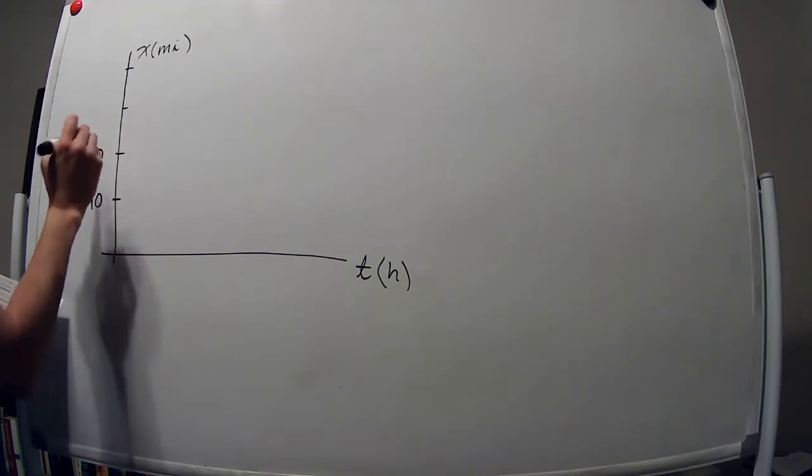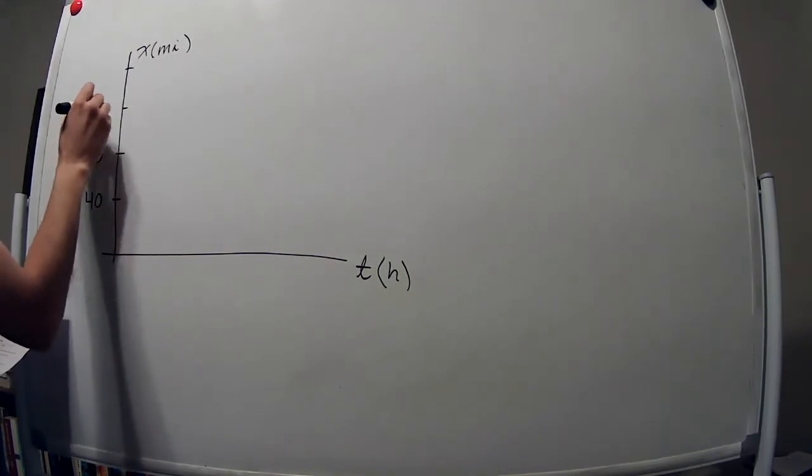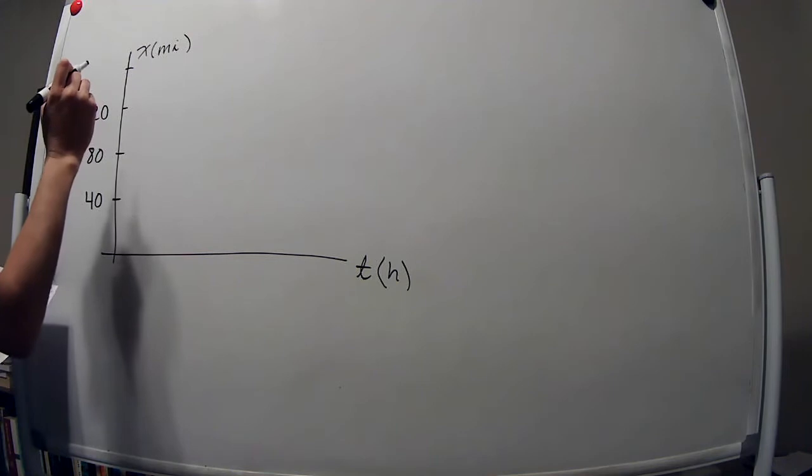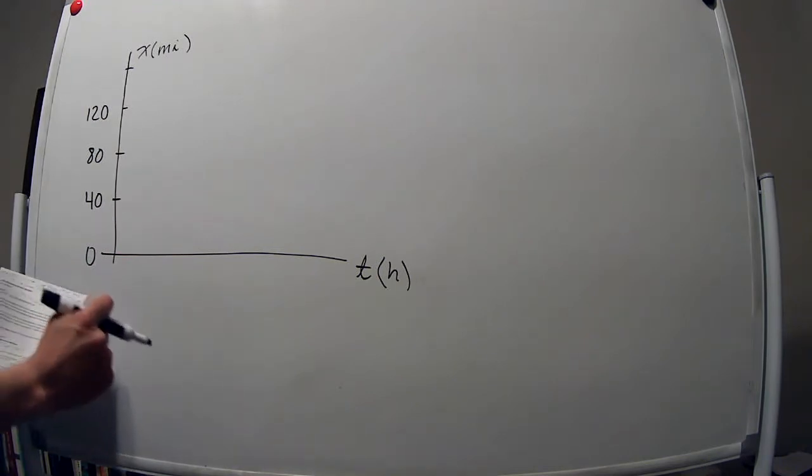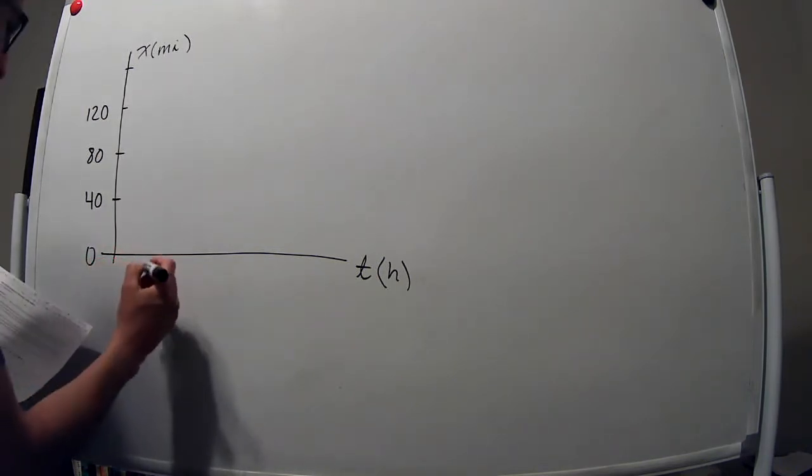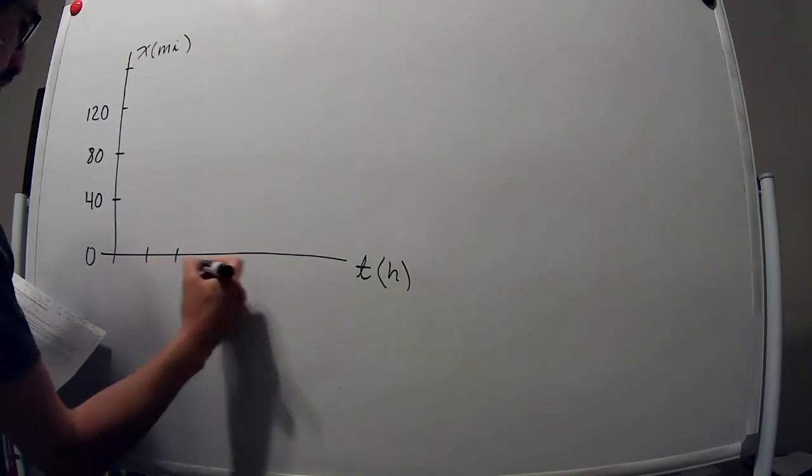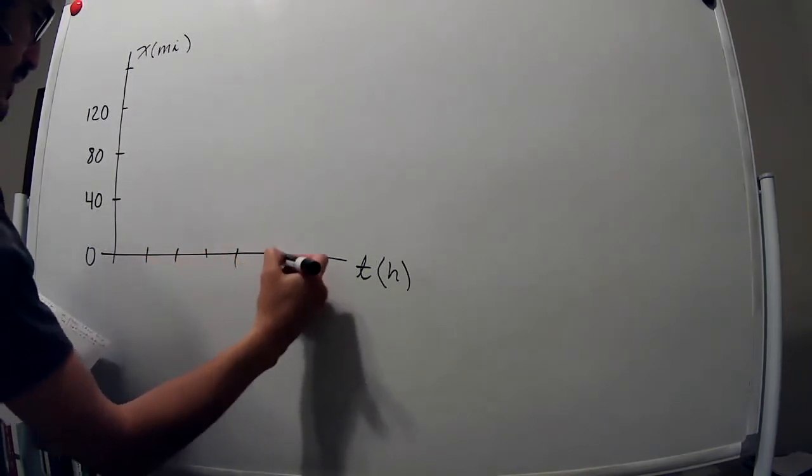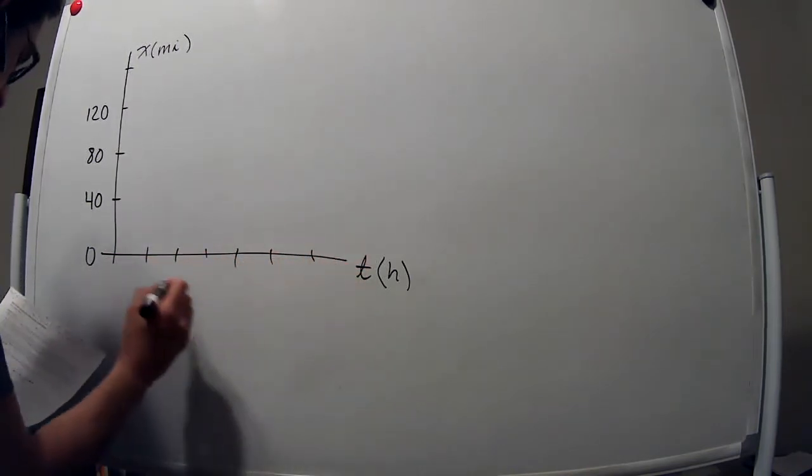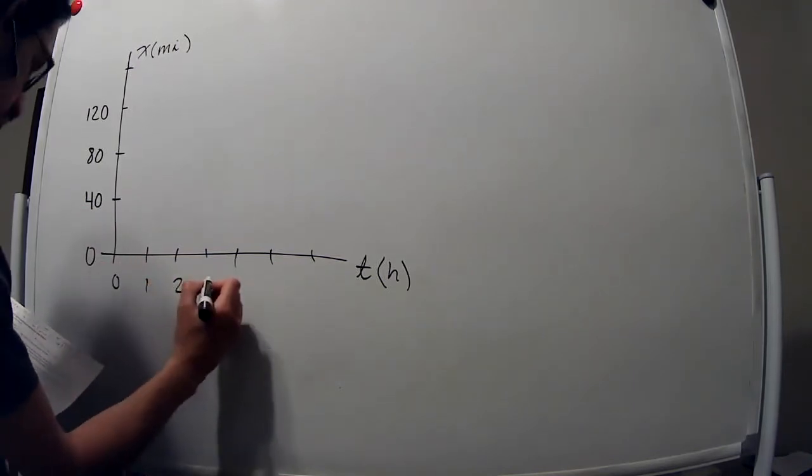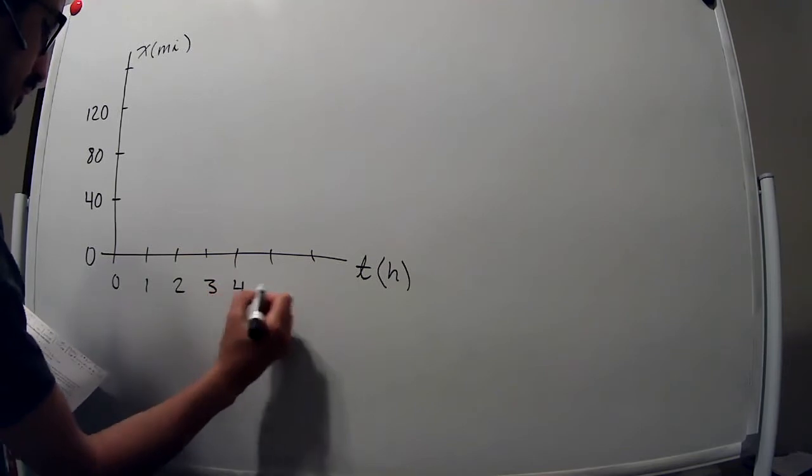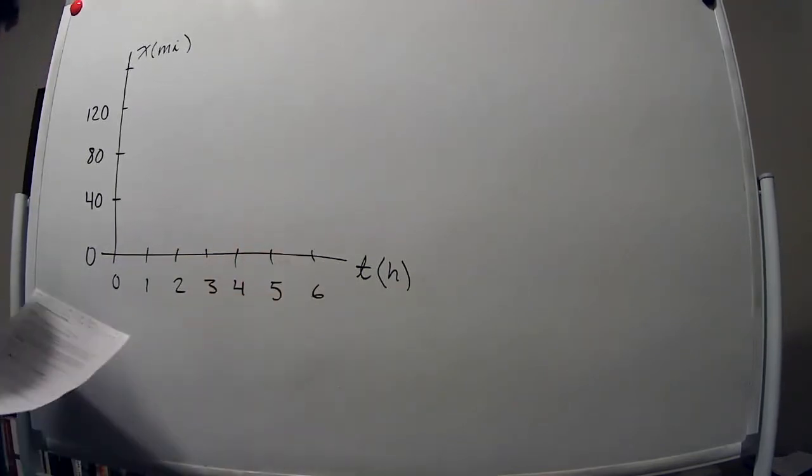So we have 40, 80, 120 miles on the vertical axis, and over here at zero hours, one, two, three, four, five on the horizontal axis, and that's it. But I'm going to include the six.